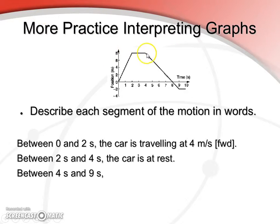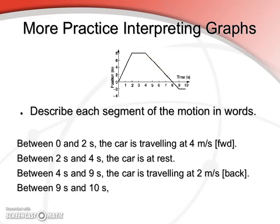Now, between four seconds and nine seconds, we have a negative slope, meaning that the car is moving backwards. We can extract that slope pretty simply, and get the car moving backwards at two meters per second. Finally, the segment between nine and ten seconds. Again, the slope is zero. The car is at rest.